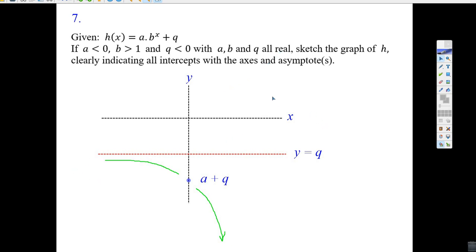And there would be your axis of symmetry, this y equals q. But a is negative, so it's got to be taking off down. So if you know the shape of exponential equations, this green line is a sketch of what it must be—taking off down.